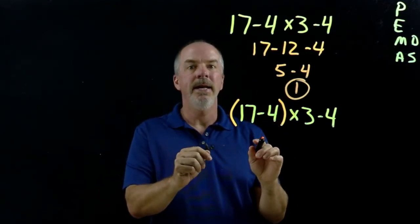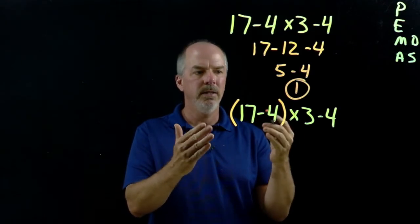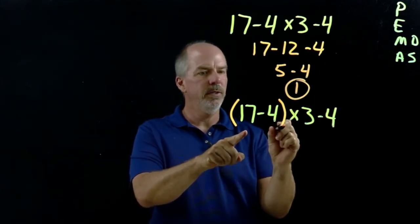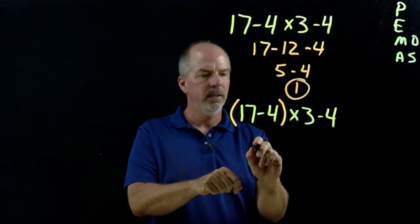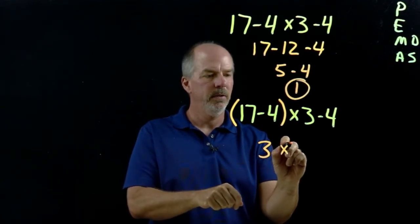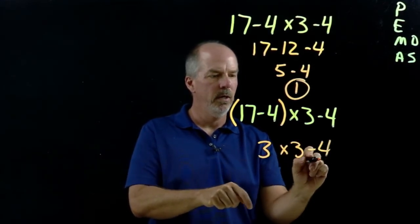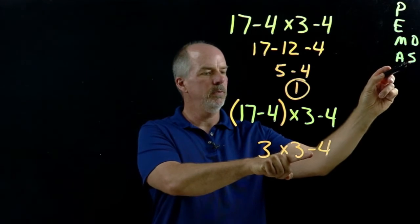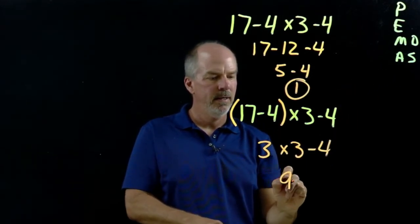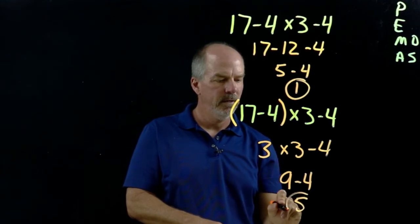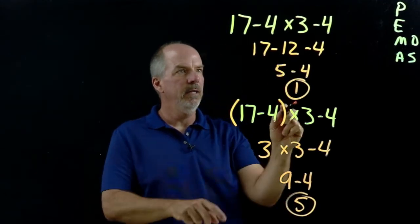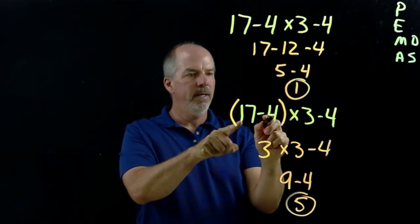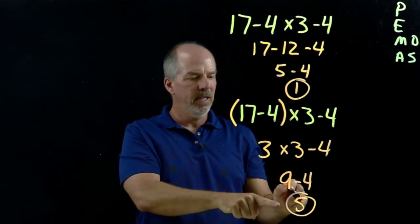Now we're evaluating with the parentheses and seeing how it changes our evaluation of the expression. We're forced to do parentheses first: 17 minus 4 is 3. Then we still have times 3 minus 4. We've done parentheses, no exponents — multiplication comes before subtraction. So 3 times 3 is 9, and minus 4 is 5. Without parentheses we came up with 1; when we added parentheses we came up with 5.